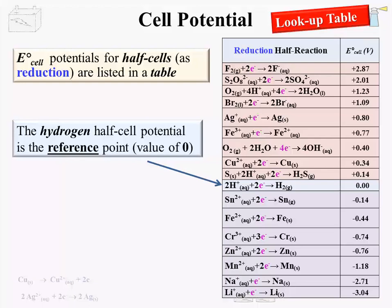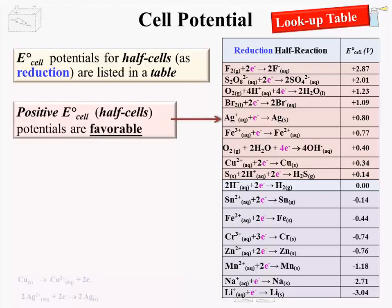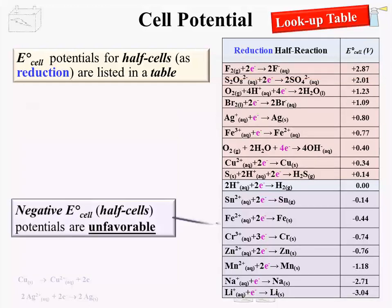The hydrogen half-cell potential is the reference point and is given a value of zero. All other half-cell reactions are compared to the hydrogen reaction. Those that have a potential energy greater than hydrogen's half-cell have positive EO cell potentials and are considered favorable or spontaneous half-reactions when written as reduction — usually listed at the greatest EO cell potential at the top, which is fluorine going to fluoride on this table. Half-cell reactions with a potential less than the hydrogen half-cell will have a negative EO cell potential and are considered unfavorable or non-spontaneous when written in the reduction direction.